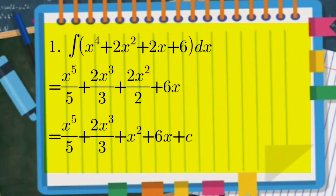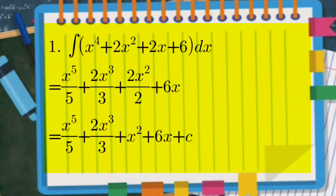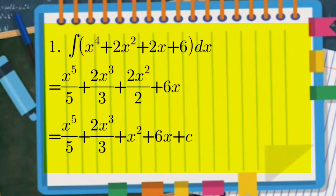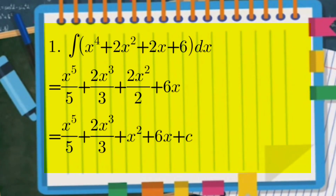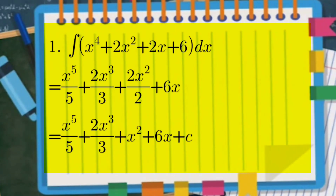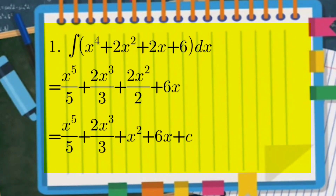So x to the power of four becomes x to the power of five over five. For the term two x to the power of two, we add one to the power: two plus one equals three, so it becomes two x to the power of three over three. For the term two x, we add one to the power so it becomes two x to the power of two over two.